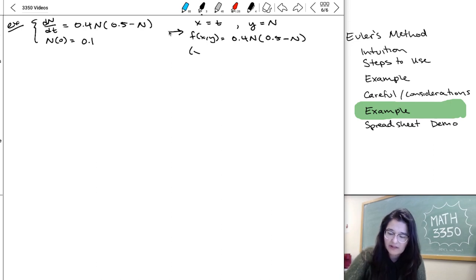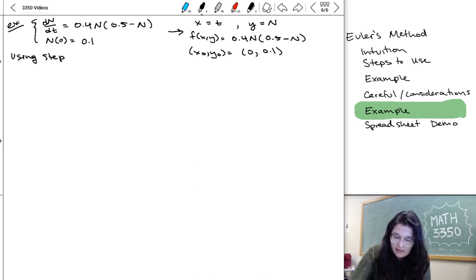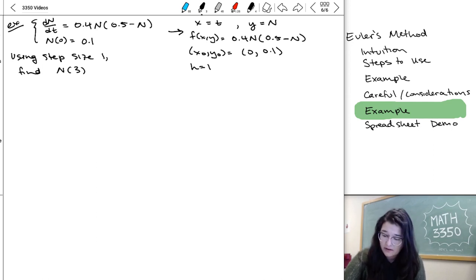That's the right-hand side of our differential equation right there. And the initial condition that we start from, x0, y0, is 0, 0.1. So we start at x or t equals 0, and then we start at y or n equal to 0.1. And in this case, what we're going to do is, using step size 1, we want to find or approximate n of 3.